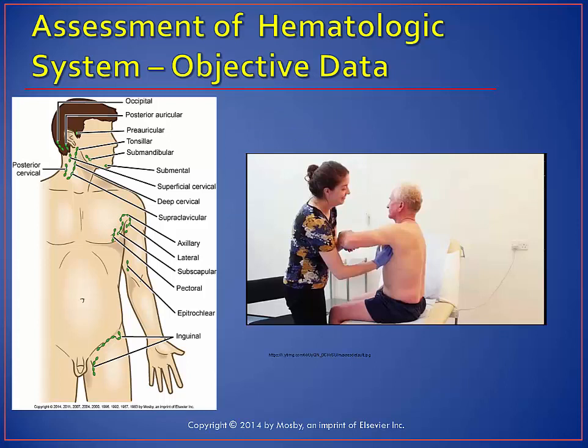Looking at the assessment data: disorders of the hematologic system can manifest in different ways. Lymph nodes are distributed throughout the body. Superficial lymph nodes can be evaluated by light palpation. Deep lymph nodes cannot be palpated and are best evaluated by radiological examination. Lymph nodes should be assessed symmetrically with regard to location, size in centimeters, degree of fixation — whether movable or fixed — tenderness, and texture. To assess superficial lymph nodes, lightly palpate using the pads of the fingers, gently roll the skin over the area, and concentrate on feeling for possible lymph node enlargement.